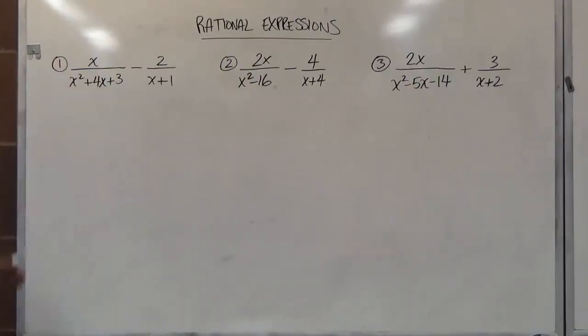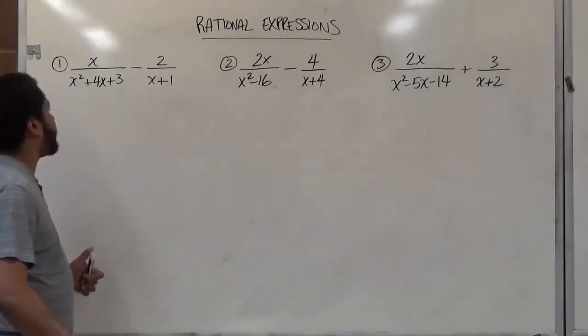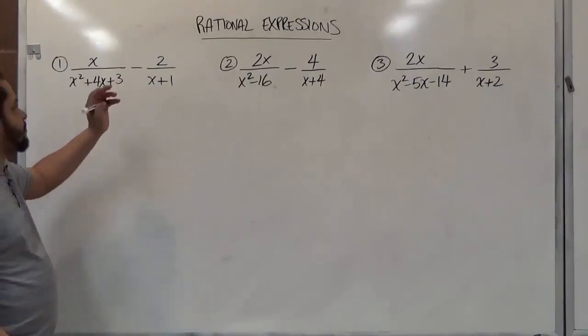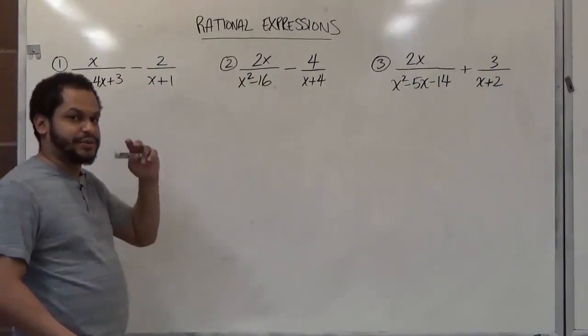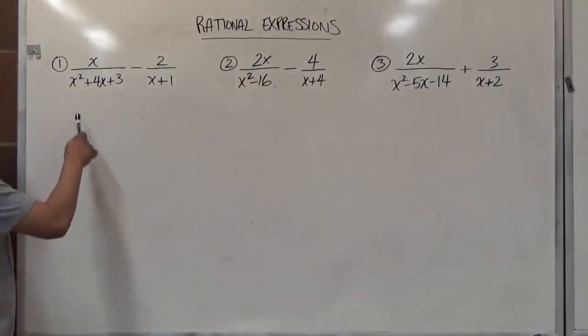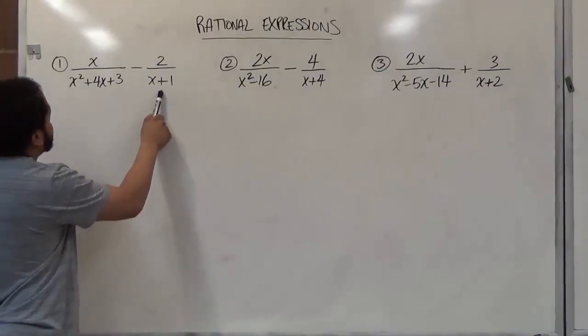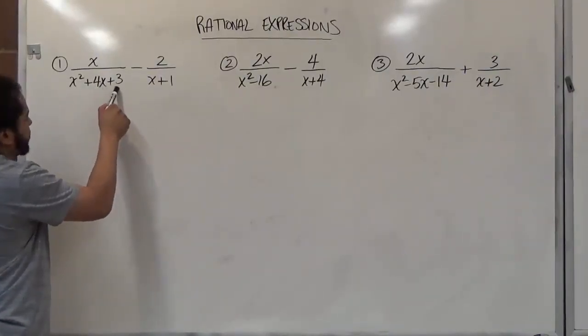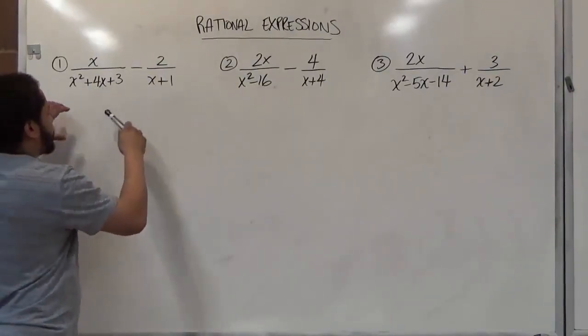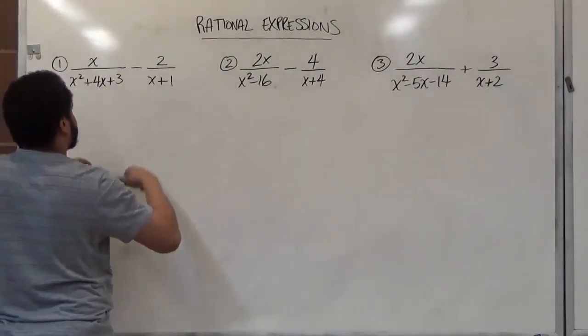So the first problem here is x over x squared plus four x plus three minus two divided by x plus one. And what we want to do here is we want to combine the two fractions into one. So to do this we're going to have to get the LCD of both of them. However we see here we have a polynomial that's a quadratic equation and here we have just a binomial. So we're going to have to factor this denominator and then find what's missing in the other so we can have the multiplier go on top and bottom so we can join the two together.